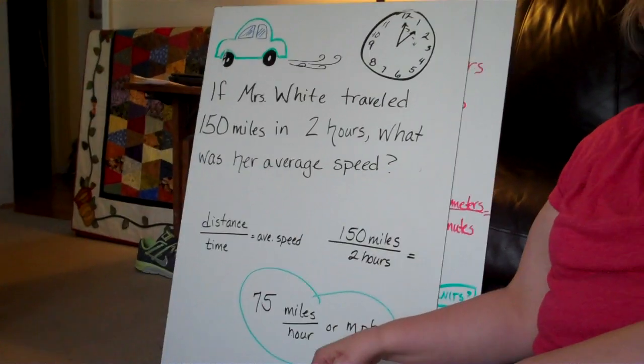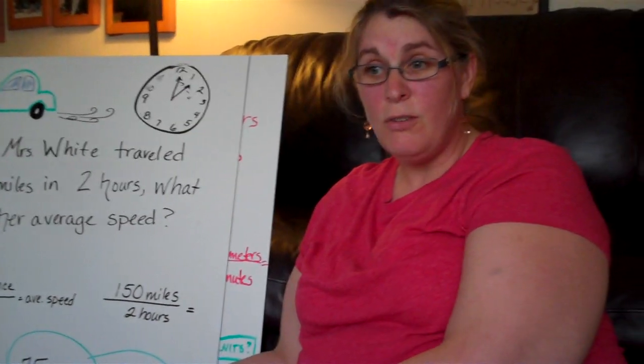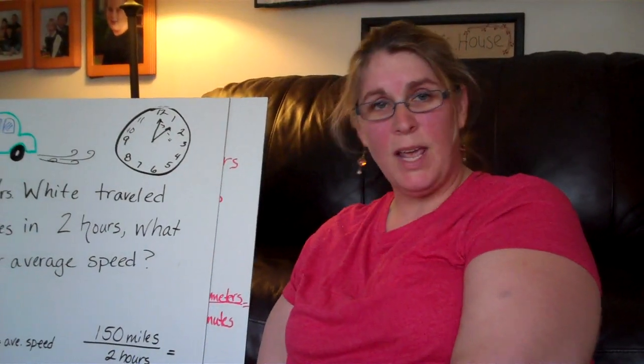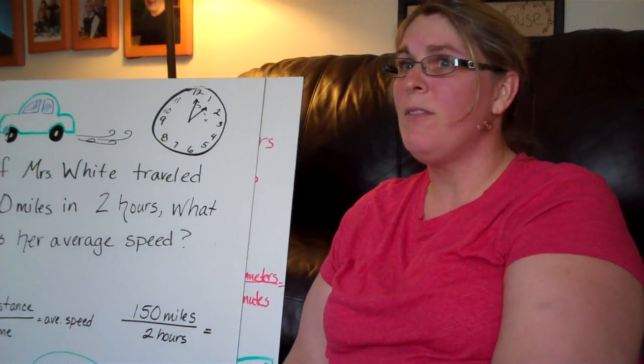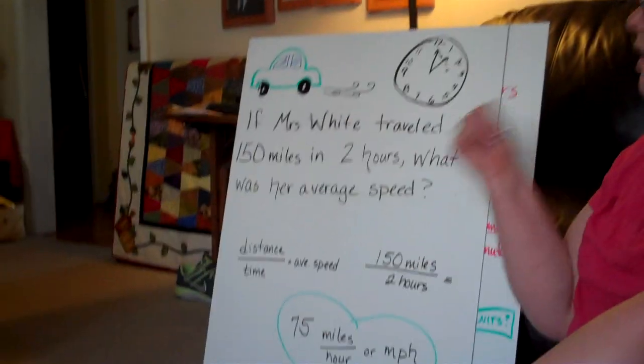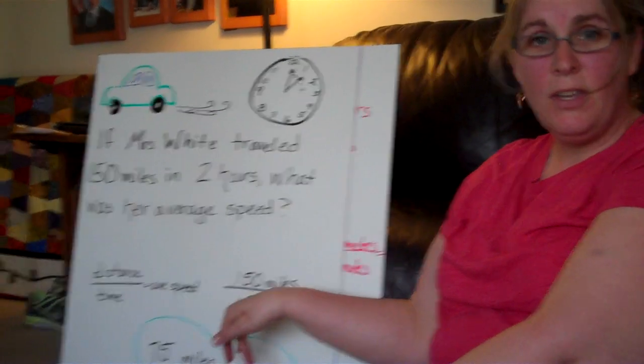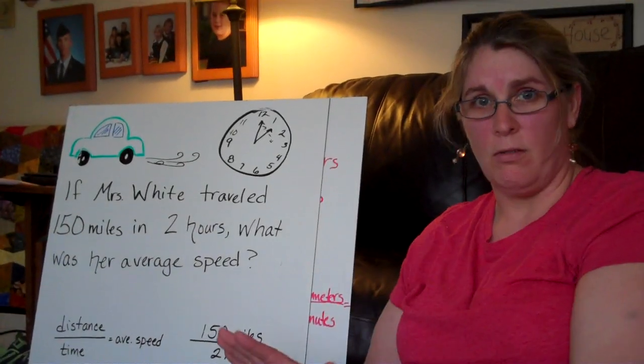Those units are super important in science because if you don't have the units, then it could be 75 bananas or 75 earwigs or 75 little boys named Bob. It's important for you to know what the units are. Without them, your answers will be wrong.